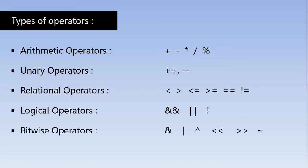And at last, the bitwise operators. Starting from the left: this is bitwise AND or binary AND, this is bitwise OR, this is bitwise XOR, a pair of less-than symbols represents the bitwise left shift operator, this is the bitwise right shift operator, and this is one's complement.